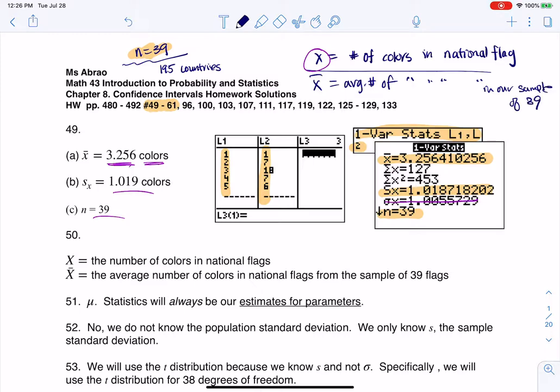Admittedly, a flag can't have 0.2 colors. You either have three or four, but this is still the numerical average. There's a standard deviation. There's a sample size. So what is x bar? If our variable is the number of colors in a flag, then x bar is going to be the average number of colors in the flag, in a national flag, in our sample of 39. So this is the average number of colors in these national flags from our sample. And then it says, what is x bar estimating? Well, it's always estimating the population mean. So x bar is a point estimate for mu. Mu is the actual average for all 195 countries.